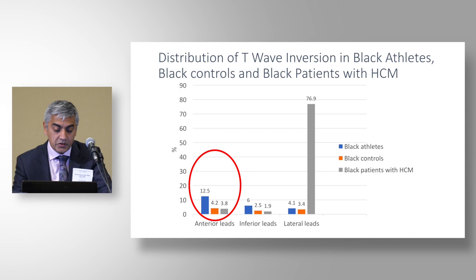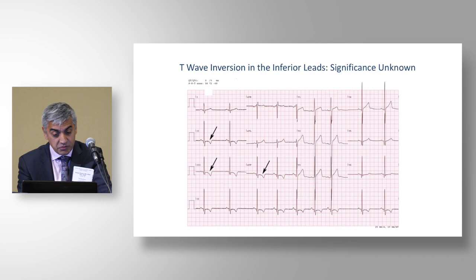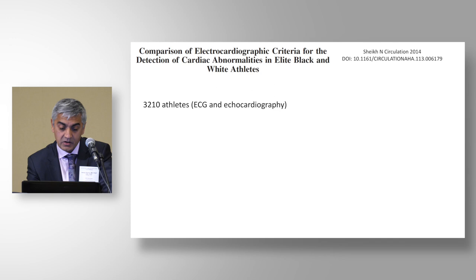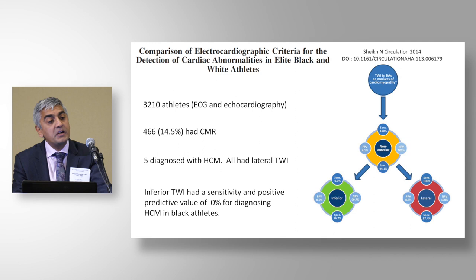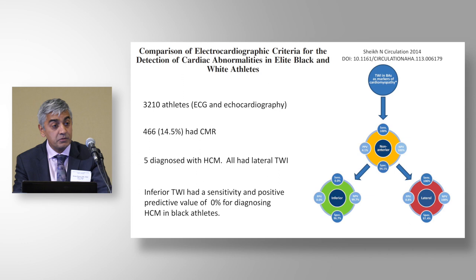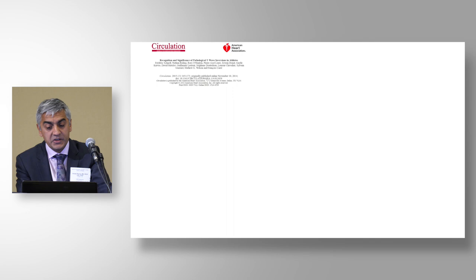What about inferior T-wave inversion? It is still more common in black athletes than in black controls and hypertrophic cardiomyopathy patients, but what does it mean? Currently it is regarded as abnormal in international recommendations, but there is room for improvement. In a dataset of 3,210 athletes — 466 with CMR — five were diagnosed with hypertrophic cardiomyopathy, all with lateral T-wave inversion. Inferior T-wave inversion had a sensitivity and positive predictive value of 0% for diagnosing HCM in black individuals. I would say inferior T-wave inversion in isolation is an equivocal finding and does not necessarily suggest cardiac pathology.